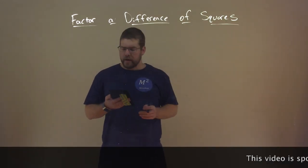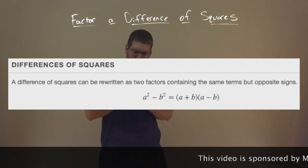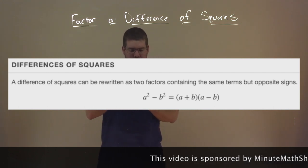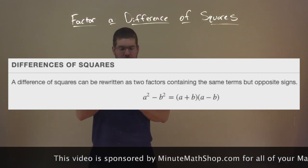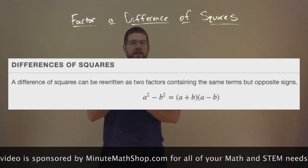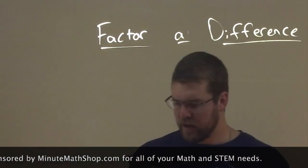The definition for difference of squares: A difference of squares can be written as two factors containing the same terms but opposite signs. a squared minus b squared equals a plus b times a minus b.